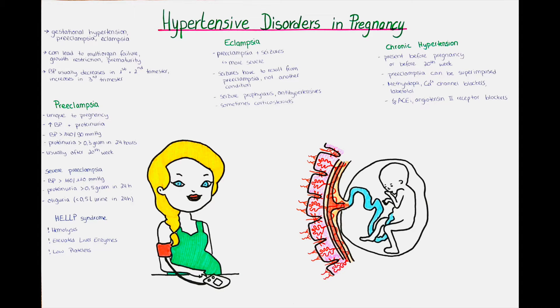To give a short explanation: gestational hypertension is when the woman has high blood pressure before getting pregnant or in the very beginning of the pregnancy. Pre-eclampsia is high blood pressure with proteinuria, and eclampsia is pre-eclampsia together with seizures, so you can think of it as a progression or exaggerated form of pre-eclampsia, with 'pre-' meaning before.